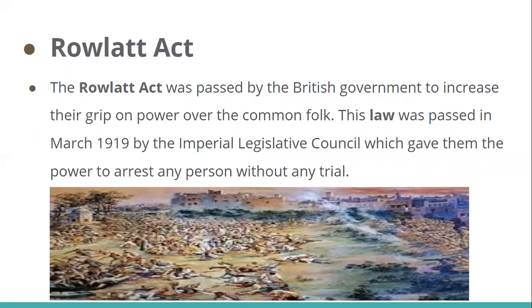The Rowlatt Act was passed by the British government to increase their grip on power over the common people. This law was passed in March 1919 by the Imperial Legislative Council, which gave them the power to arrest any person without any trial.